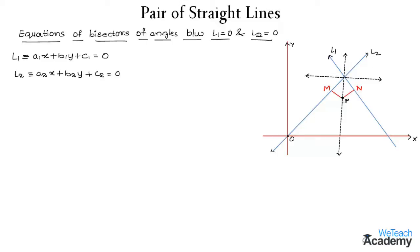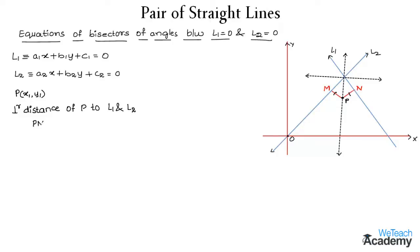There is a point P which is equidistant from both the lines L1 and L2. Let us assume its coordinates as P(x1, y1), which is a point on the pair of bisectors of lines bisecting the angles. The lengths PM and PN are the perpendicular distances from point P to both lines L1 and L2, and note that PM is equal to PN.